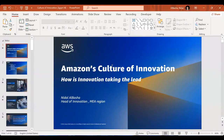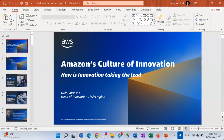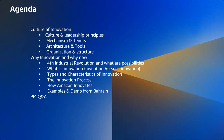Let's start with innovation. Our session will have two parts. The first part is quickly talking about how we innovate and what our culture of innovation looks like — how we tackle innovation. The second session will cover the fourth industrial revolution, invention versus innovation, types and characteristics of innovation, the innovation process, how Amazon innovates, and some examples and demos. I'll share three examples and demos, from the problem statement, framing the challenge, then the solution.